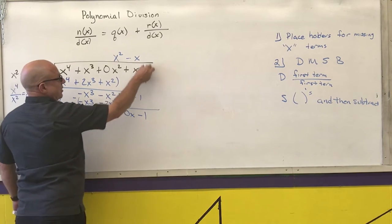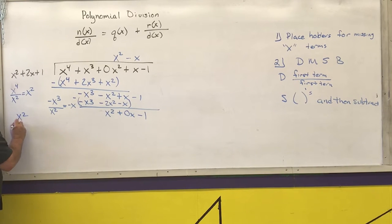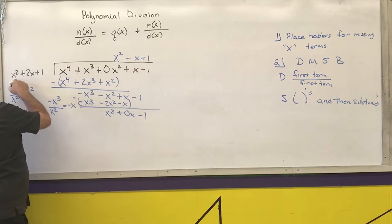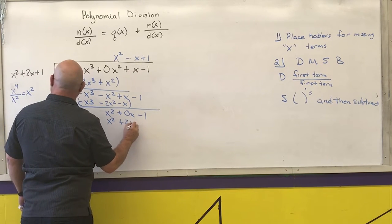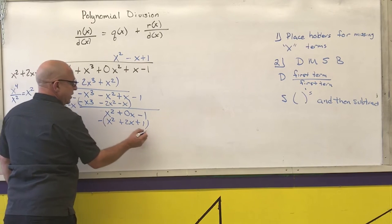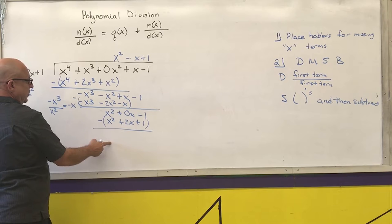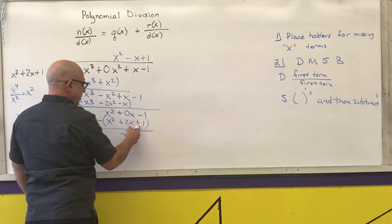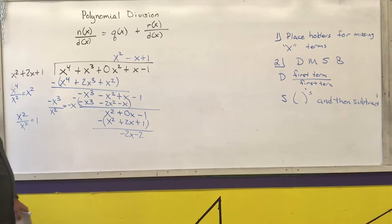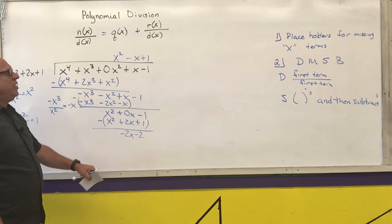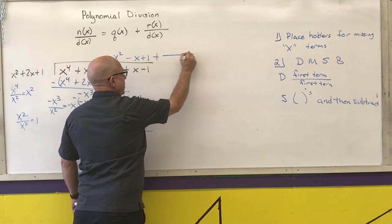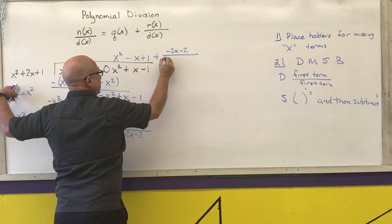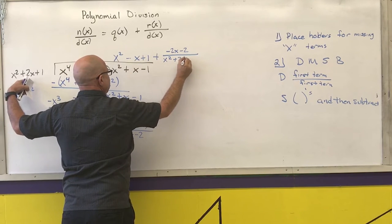The last step: x squared over x squared is 1. Put 1 over the constant column. 1 times anything is that anything, so I get x squared plus 2x plus 1. Put parentheses around it and subtract: any number minus itself is 0, 0 minus 2 is negative 2x, and negative 1 minus 1 is negative 2. That's my remainder, so I write plus negative 2x minus 2 over the original divisor x squared plus 2x plus 1.